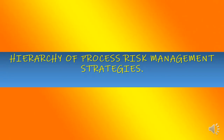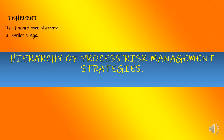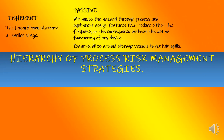This slide explains the hierarchy of process risk management strategies. In the hierarchy, inherent is the highest and most robust strategy, while procedural is the least effective. Inherent is the method of removal or elimination of the hazard at an early stage. The next is passive, which minimizes hazard through process and equipment design features that reduce either the frequency or consequence without the active functioning of any device. For example, dykes around storage vessels to contain spills.